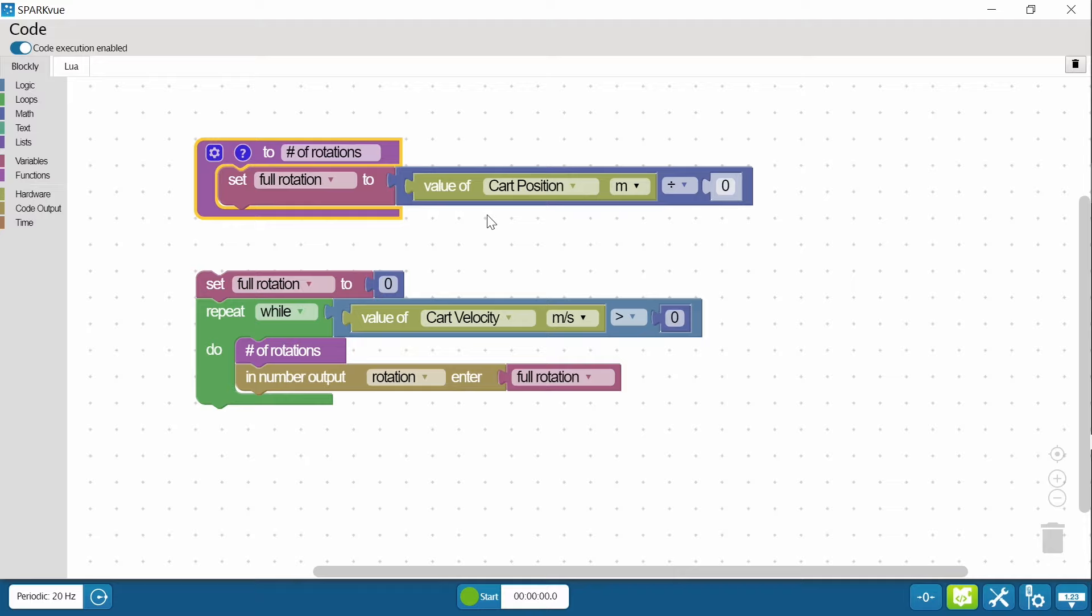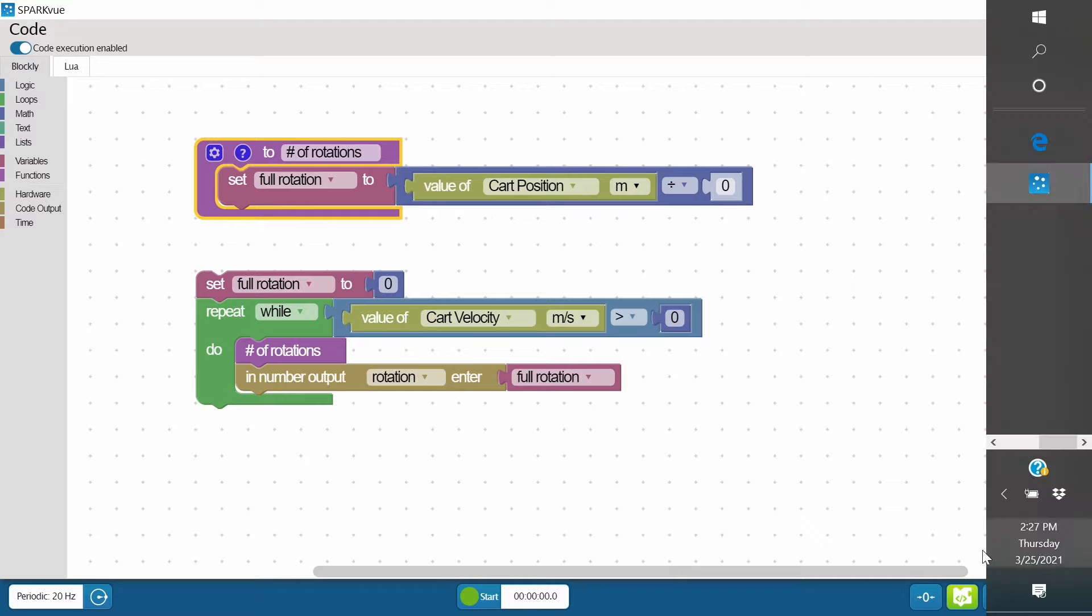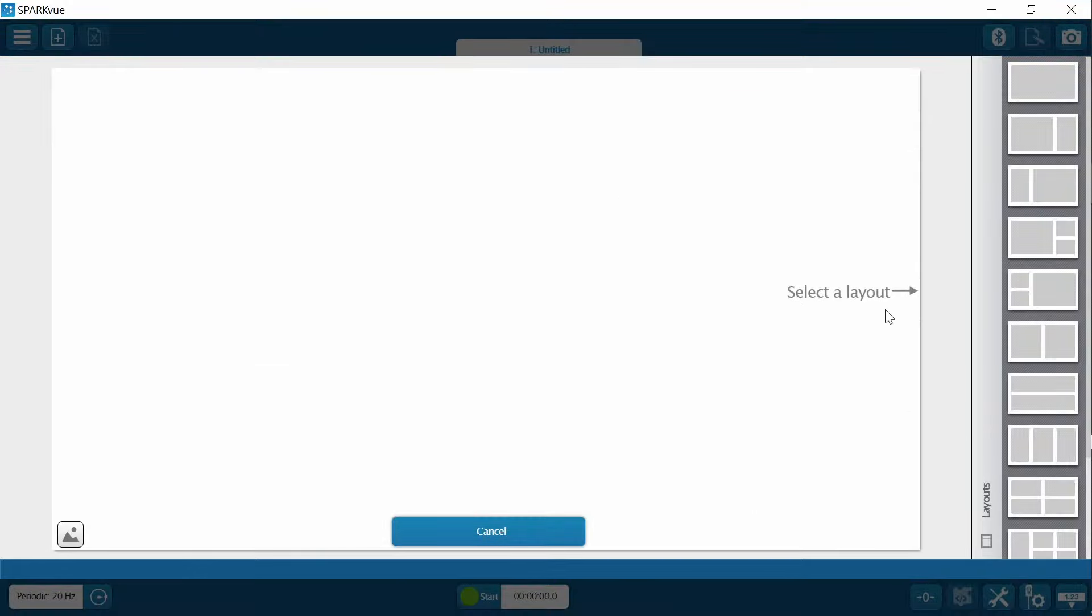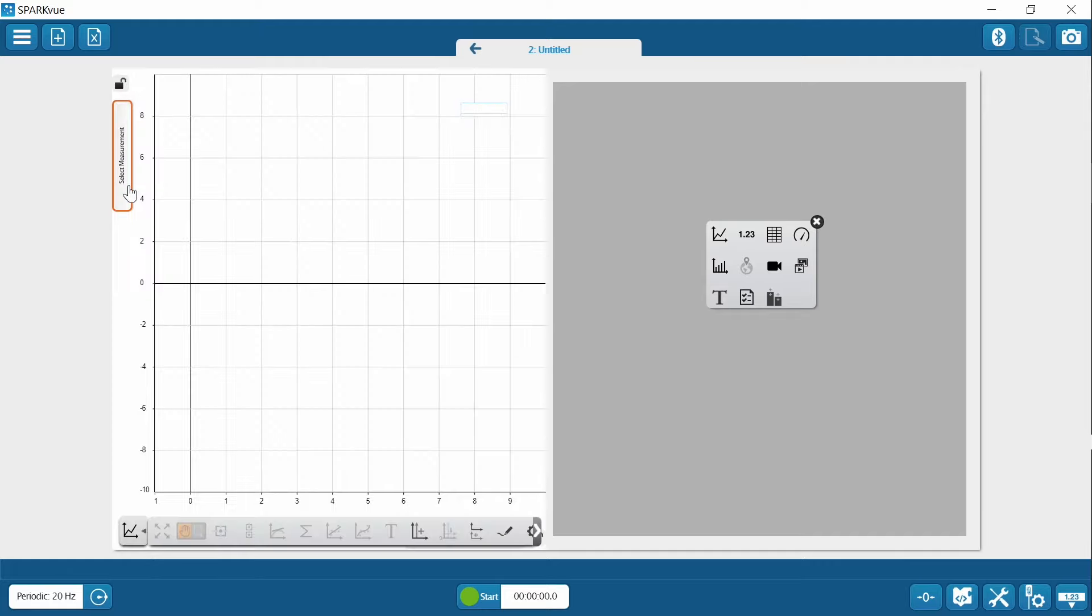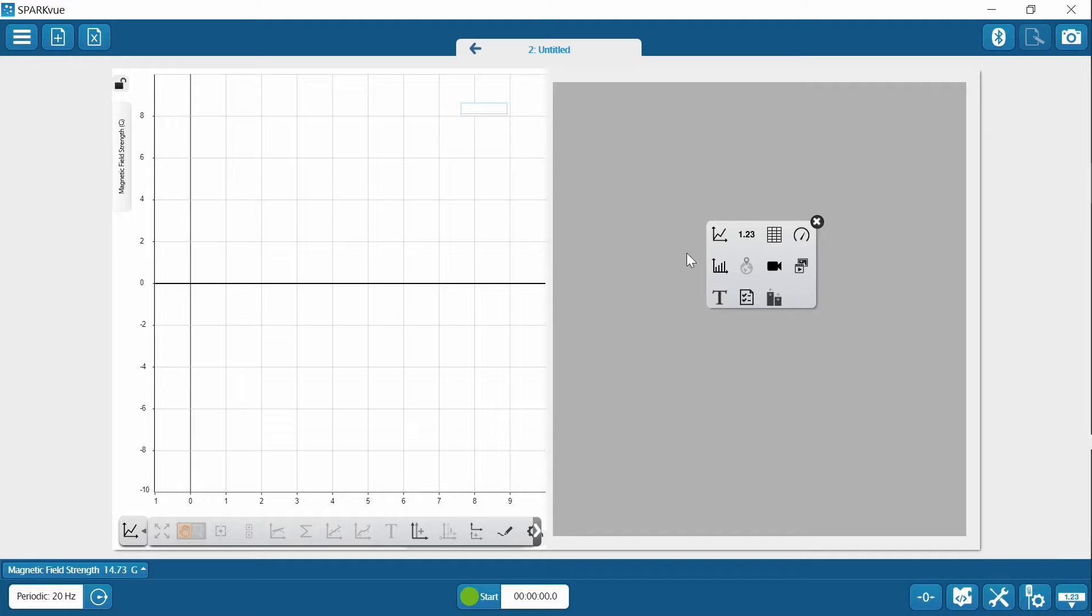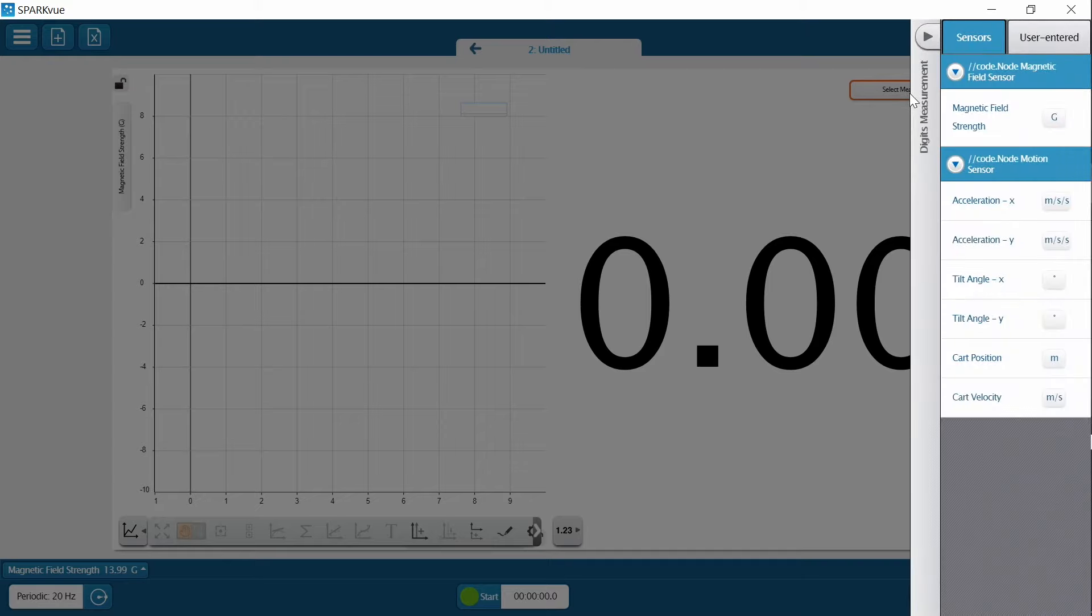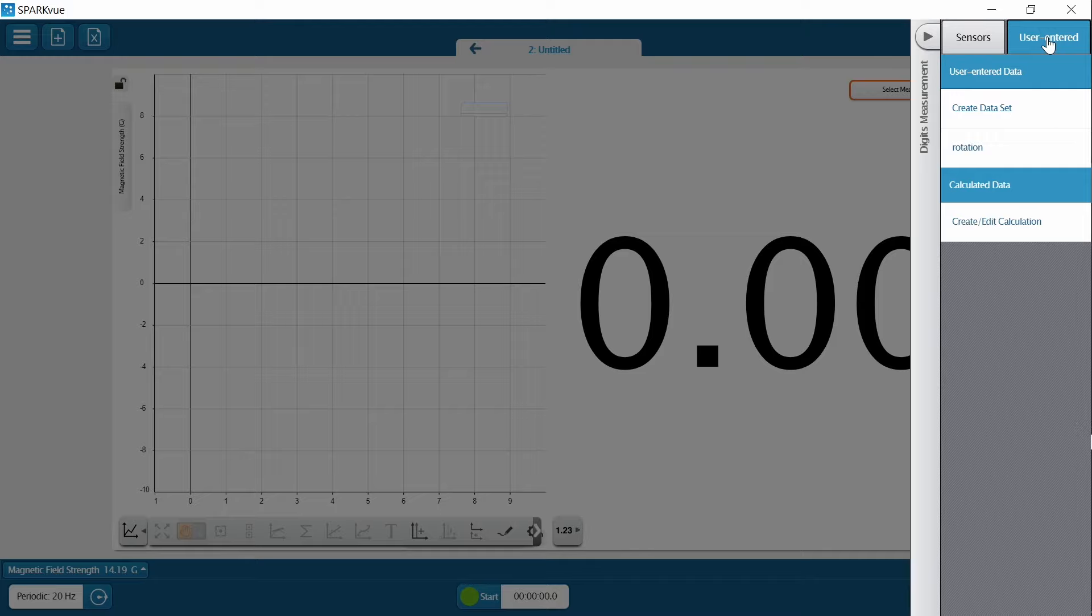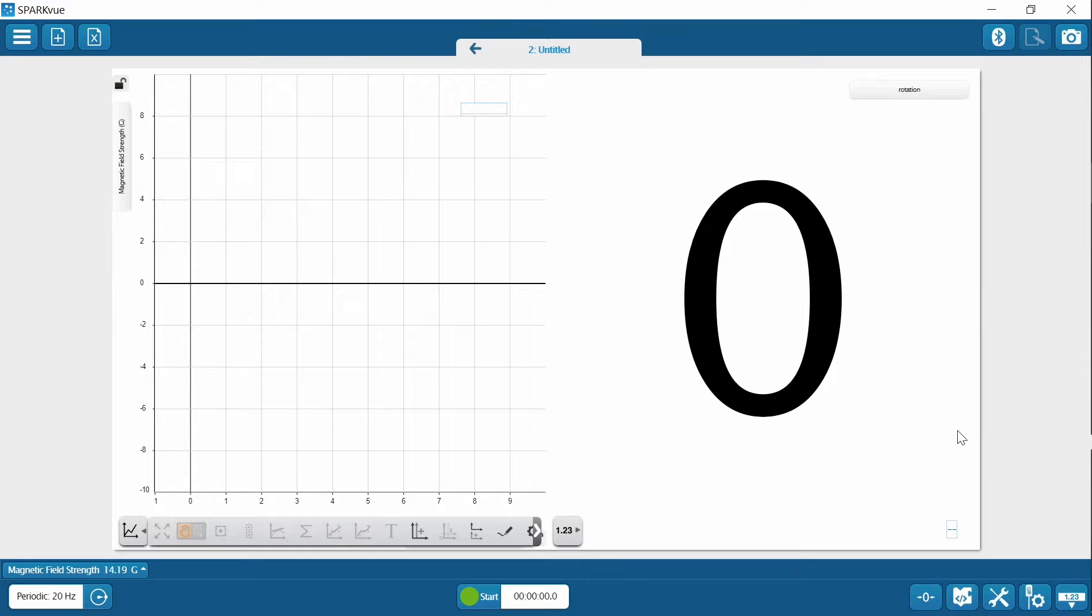All right, so there's our program. I'm going to do one more thing. I'm going to go back and click the code and add a page, because I want to see a couple things. I'm going to choose the two page template. And on this side, I want to have magnetic field strength over time so you can see peaks. Here, I'm just going to click on the digits. But on select measurement, I want user entered. That's that output of numerical output that you created earlier. And I named it rotation so I could find it easily.